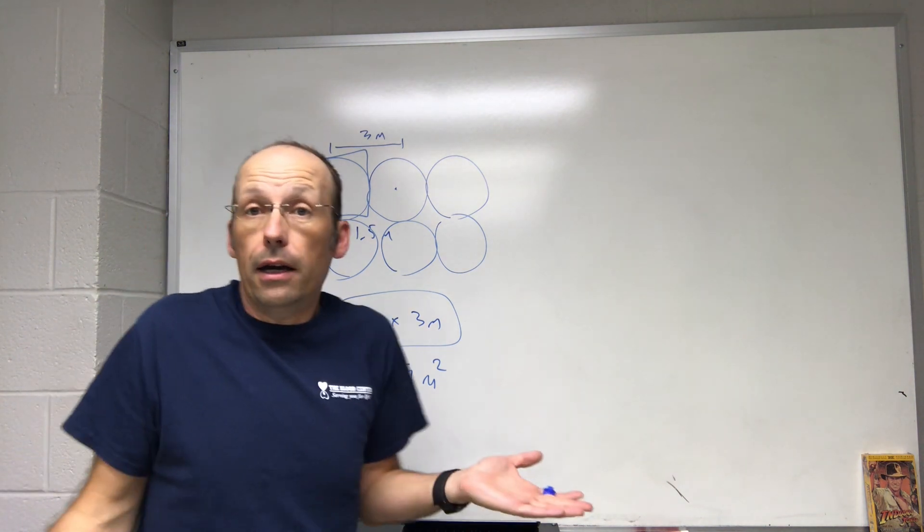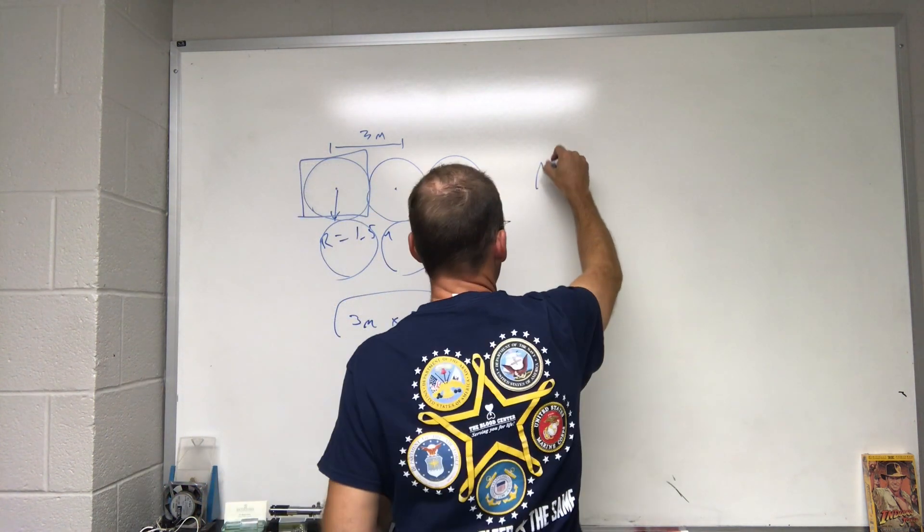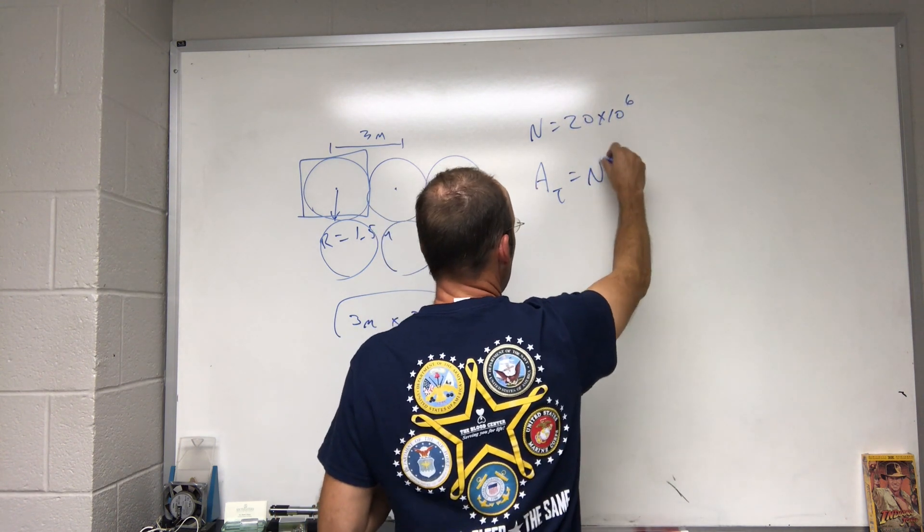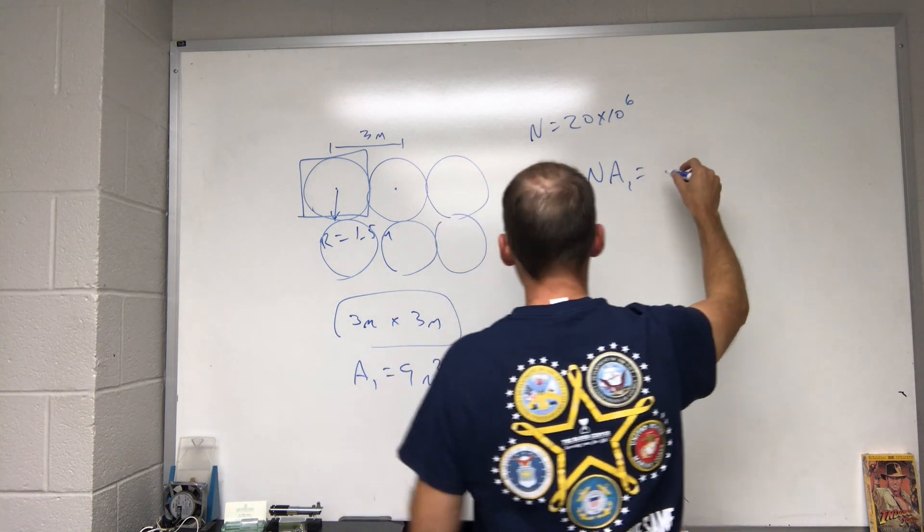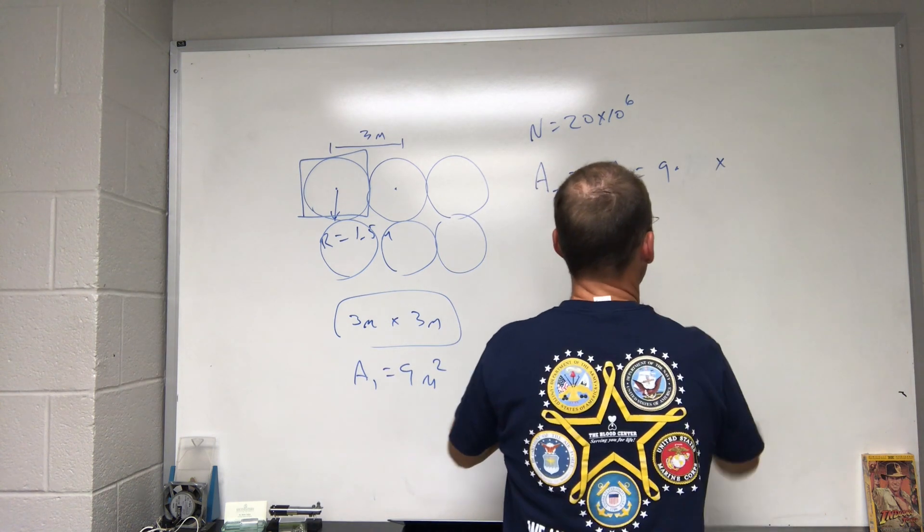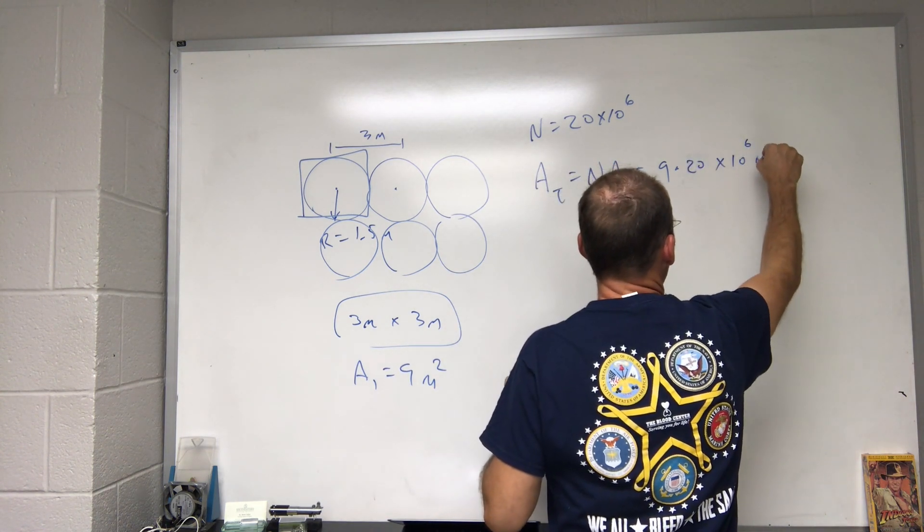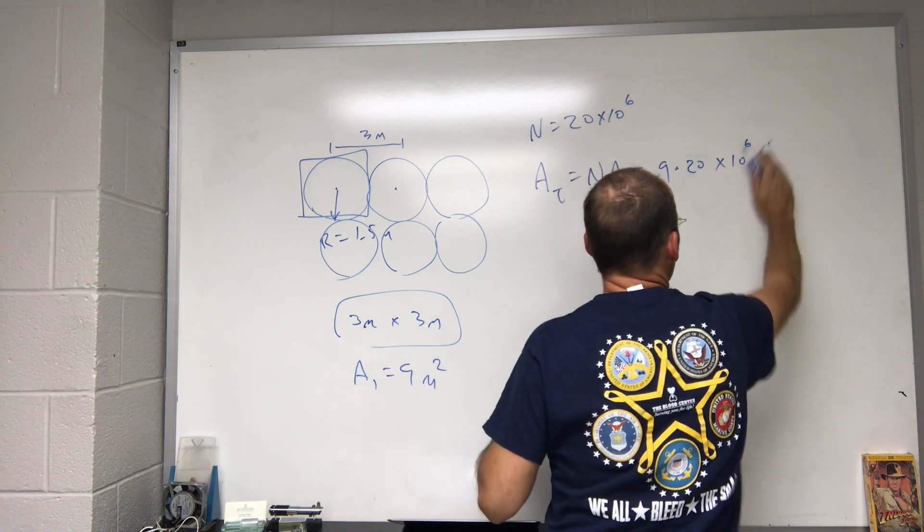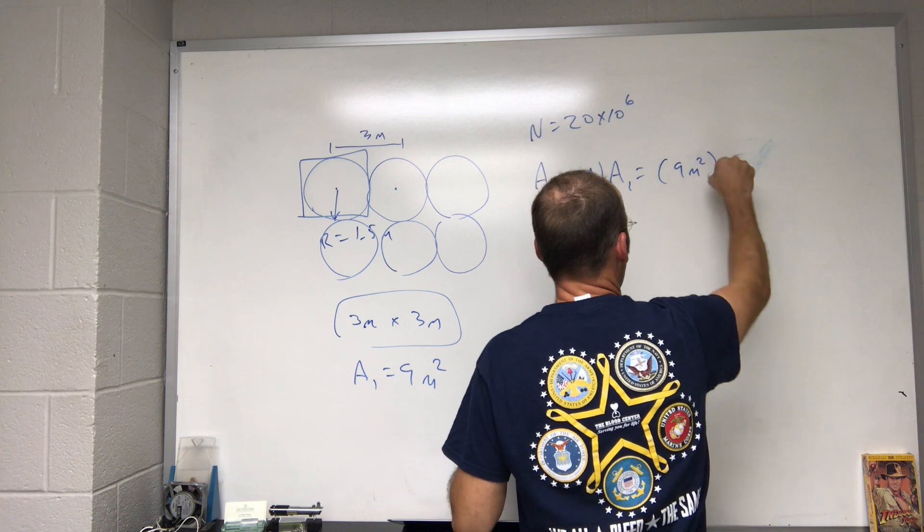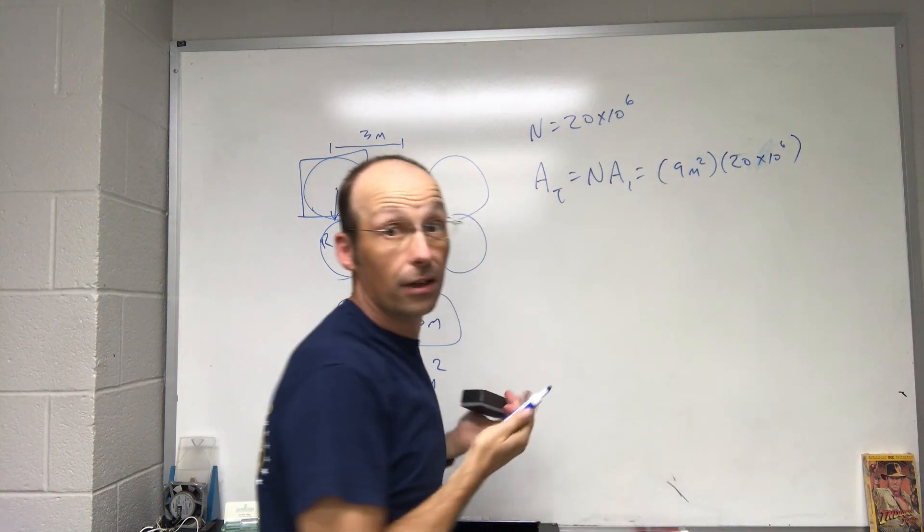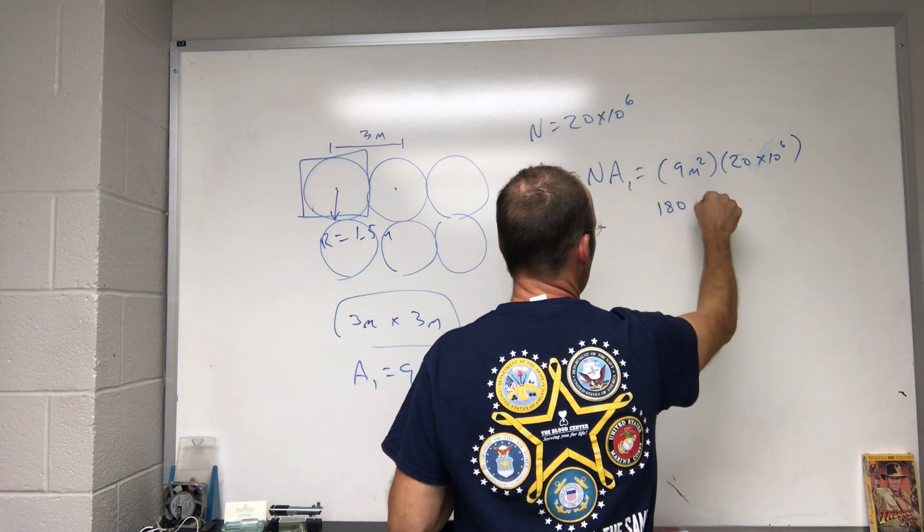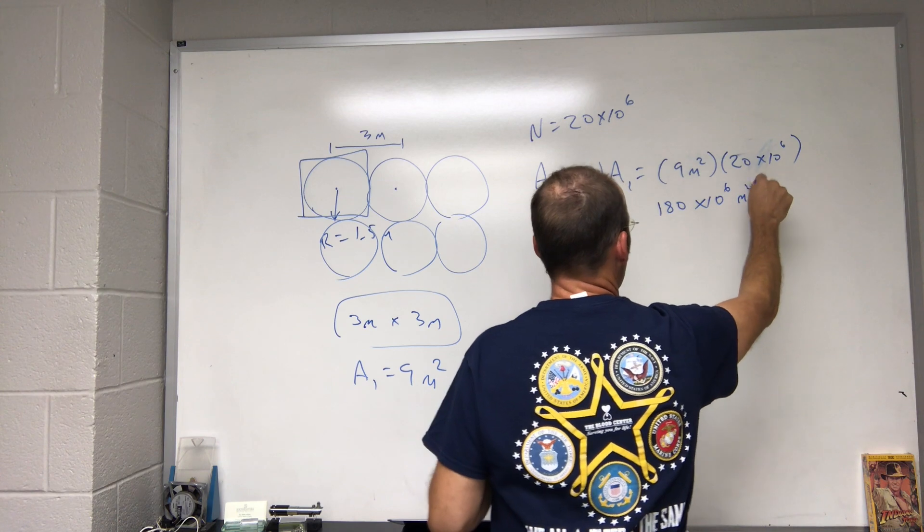So, now, I just need to multiply that by 20 million trees. Area total, let's say n is 20 times 10 to the sixth trees. So, the area total is gonna be n times a1. So, it's going to be nine times 20, that's a bad 20, look at that, bad 20, 20 times 10 to the sixth square meters. I'm gonna write it the right way. 9 meters squared times 20 times 10 to the sixth. Now, look, you don't need a calculator for this. You really don't. Because 9 times 20 is 180 times 10 to the sixth square meters. And that's the answer.